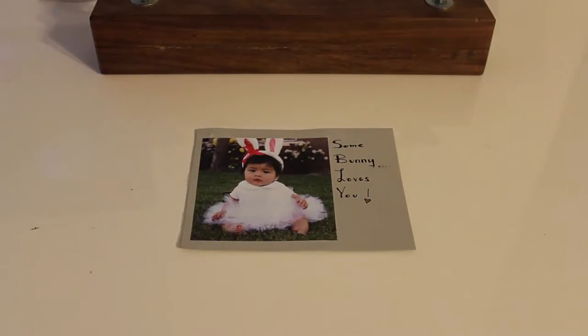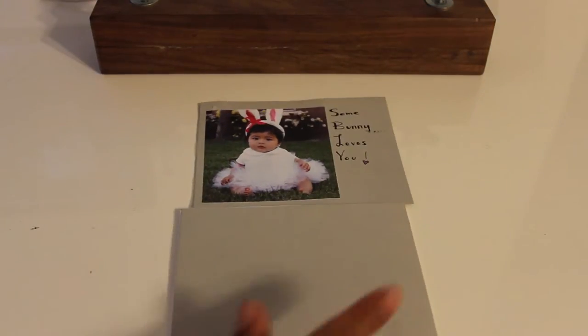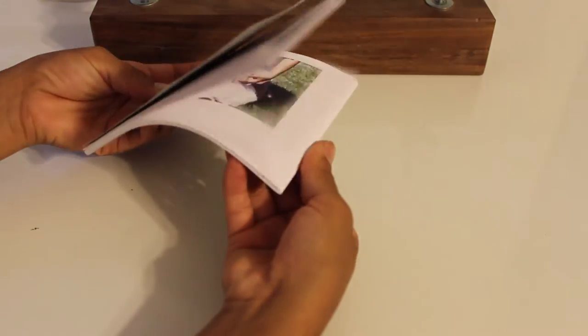Once printed, I just lined them all up to make my photo book. I made the cover out of just plain cardstock gray paper, and I just cut it to the size of my pictures, which was once again 4 by 6 inches.